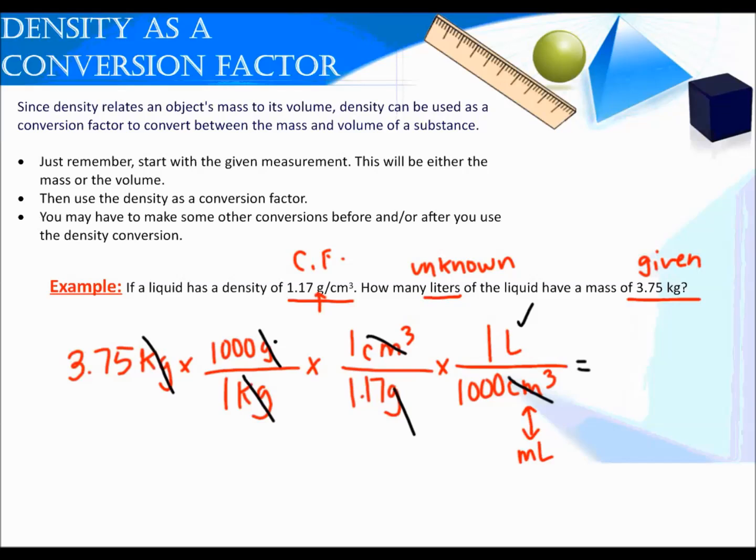When I multiply everything across the top and divide by everything on the bottom, I'm going to get an answer of 3.205 liters. I need to check for sig figs. Since my given had 3 significant figures, my answer needs to have 3 significant figures. The first 3 digits are significant. The 4th one is a 5, so it rounds up to 3.21 liters with 3 sig figs.